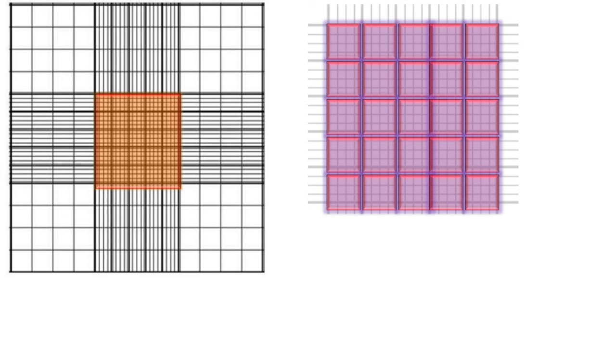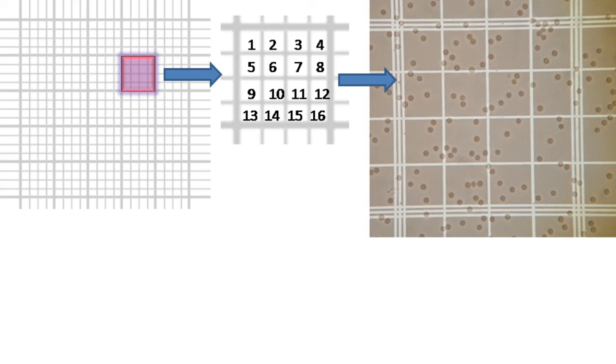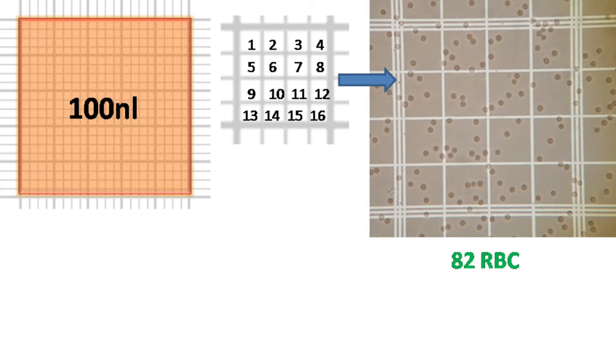And each sub square is divided into 16 sub squares. Let's say total number of RBC that you calculate in the sub square is 82. Okay, now let's go back to the magical number: 100 nanoliters. 100 nanoliters is the volume occupied by the large square.